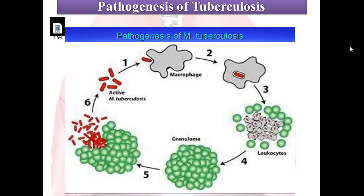If the immune system cannot keep the tubercle bacilli under control, the bacilli begin to multiply rapidly and TB disease develops. This process can occur in different areas of the body such as the lungs, kidneys, brain, or bone. Persons with latent tuberculous infection cannot spread the infection to other people and are not regarded as having a case of TB.